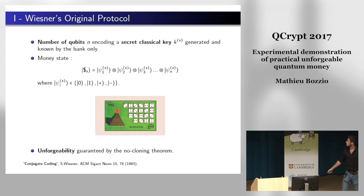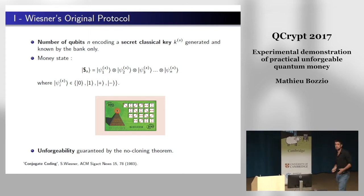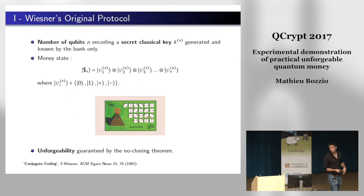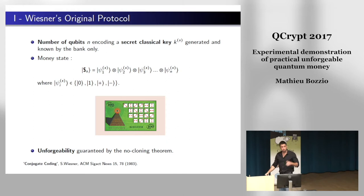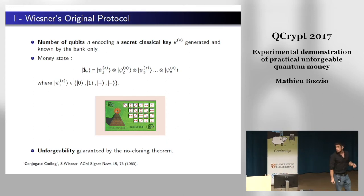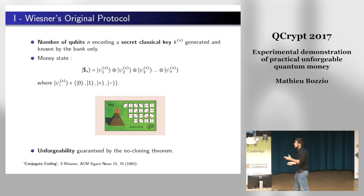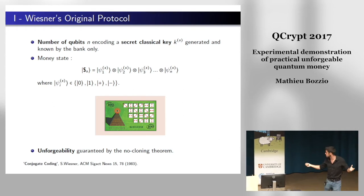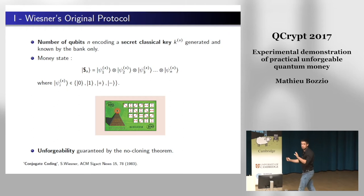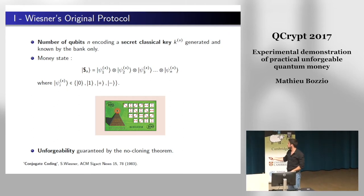The bank generates the key and quantum state and gives it to the client. Whenever the client wants to make a payment, he sends the whole quantum state to the bank for verification. The bank verifies with the classical key whether all measurements, measured in the correct basis, coincide with what the bank expects. If everything coincides, the bank accepts the banknote and the payment proceeds. If there are differences, the bank rejects the note as a counterfeit. Unforgeability is guaranteed by the no-cloning theorem.